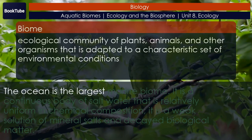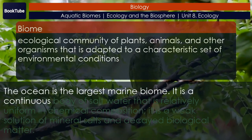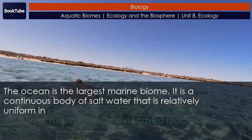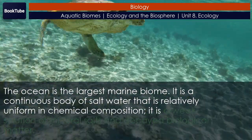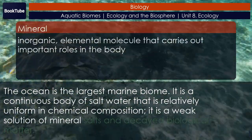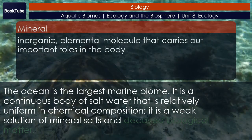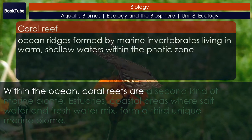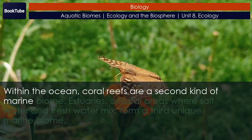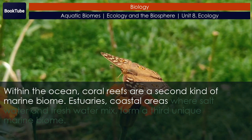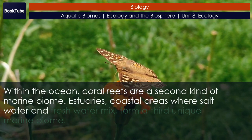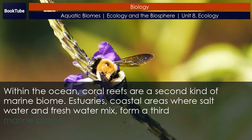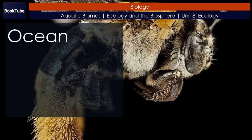Marine biomes: the ocean is the largest marine biome. It is a continuous body of salt water that is relatively uniform in chemical composition — a weak solution of mineral salts and decayed biological matter. Within the ocean, coral reefs are a second kind of marine biome. Estuaries — coastal areas where salt water and fresh water mix — form a third unique marine biome.